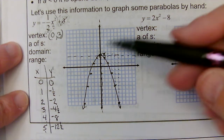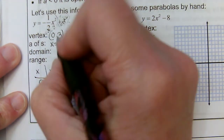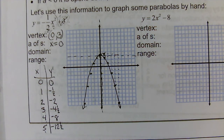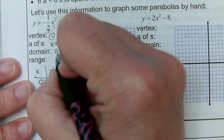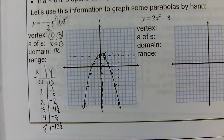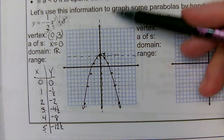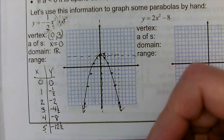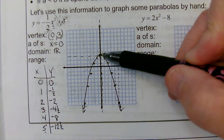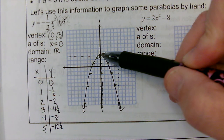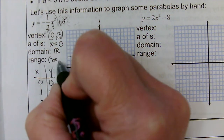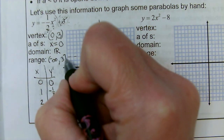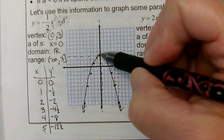The axis of symmetry is always x equals whatever the x-coordinate of the vertex is. The domain means what numbers can you plug in for x. For these parabolas with quadratic functions, the domain is always all real numbers — that funky R with a double bar means all real numbers. The range is the y values we get out of it — think about vertical spread from bottom to top. This parabola keeps going down forever to negative infinity, and it stops at the y value of 3, so the range is from negative infinity up to 3, with a square bracket on the 3 because it actually reaches that value.